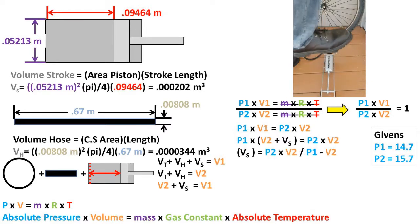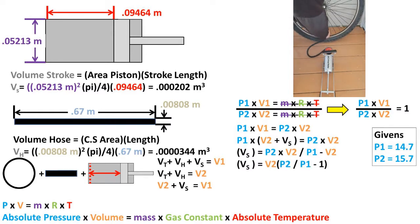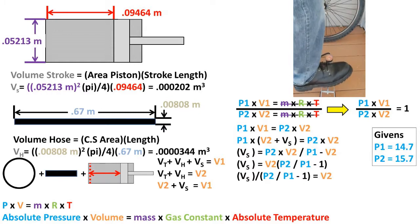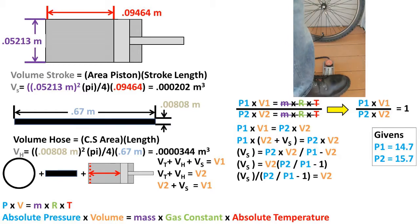Now we want to get V2 to one side of the equation, so we can first divide both sides by P1, then subtract both sides by V2. Now we can factor out volume 2, and divide both sides by what we factored out. We are left with volume of the stroke divided by parenthesis P2 over P1 minus 1 parenthesis being equal to volume 2.